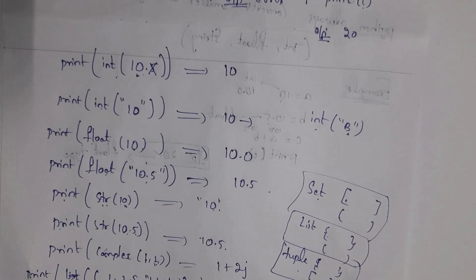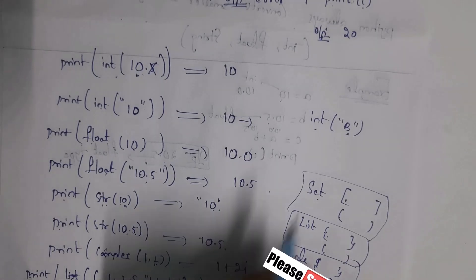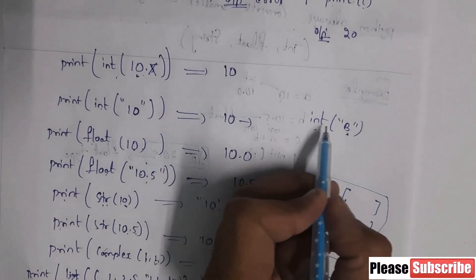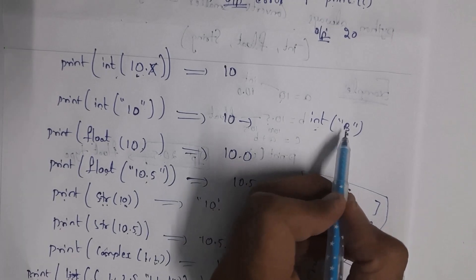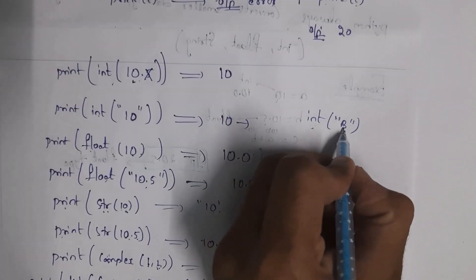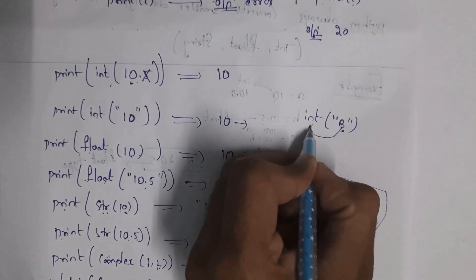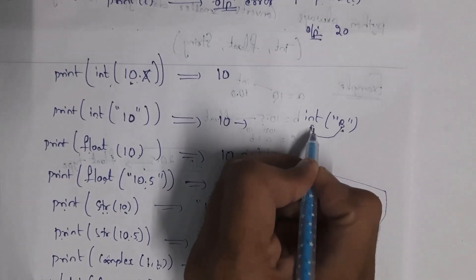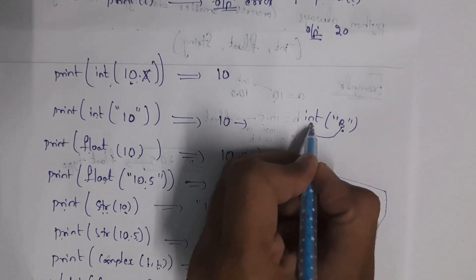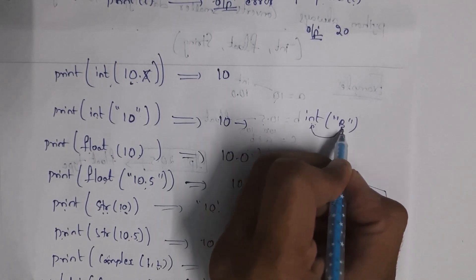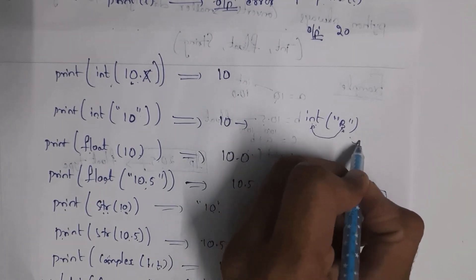Remember that we cannot convert alphabets or words to integers. For example, int('b') — where 'b' is an alphabet — cannot be converted to an integer value. So whenever you write int('b'), it will display an error.